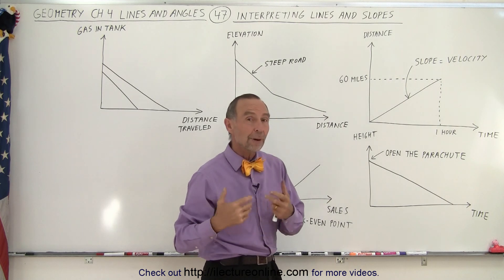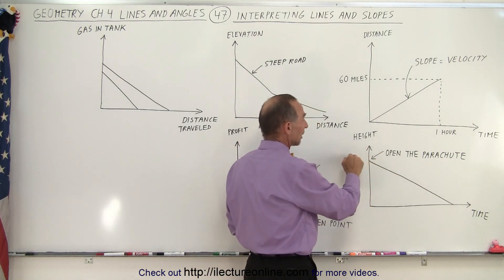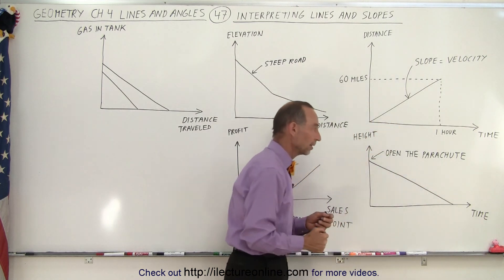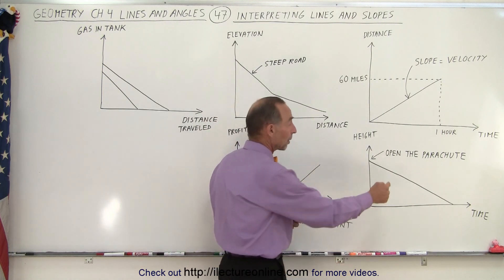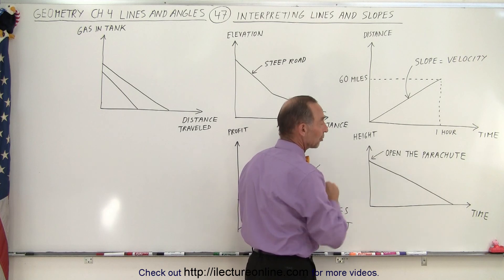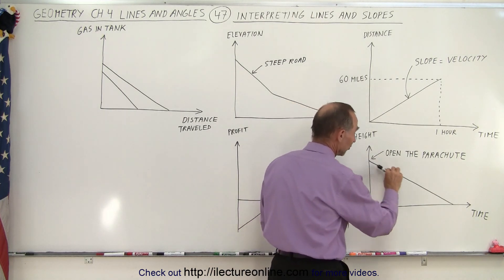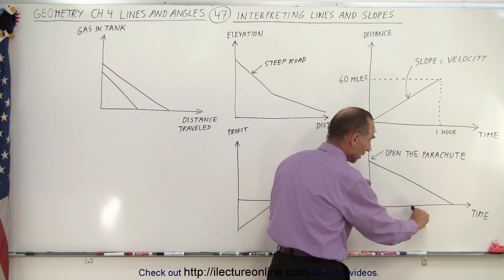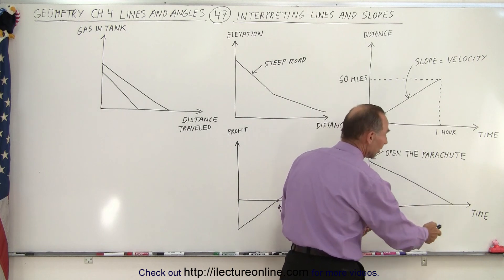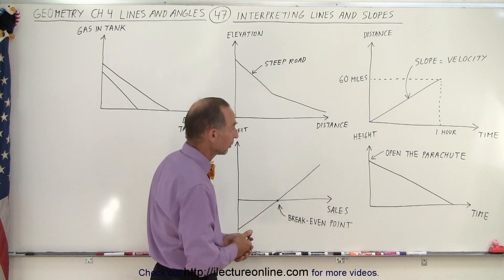You could also have it represent jumping out of an airplane, opening a parachute, and then slowly losing height until you reach the ground. And of course that takes a certain amount of time. What does the slope represent in this case? It represents how fast you're coming down with the parachute. And hopefully you want the slope not to be too steep. If it's too steep you would hit the ground too fast, you might get hurt. So you want a parachute that will take you down very gently, just a few meters per second so that when you get to the ground you don't get hurt.